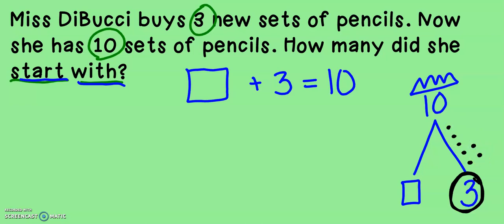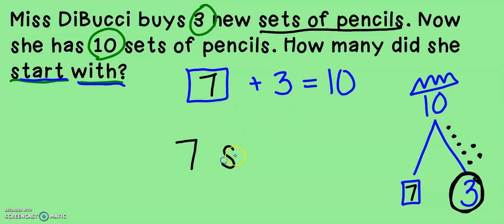Let's count and see how many I added: one, two, three, four, five, six, seven. I added seven. That means that Miss Debussy started with seven sets of pencils. I'm going to just write seven sets.